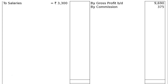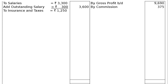As per adjustment number three, salaries rupees 300 and taxes rupees 120 are outstanding. So salaries rupees 3,300 plus outstanding salary rupees 300 gives a final column figure of rupees 3,600.